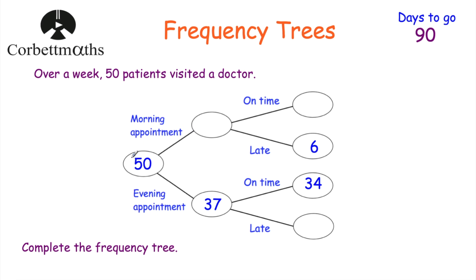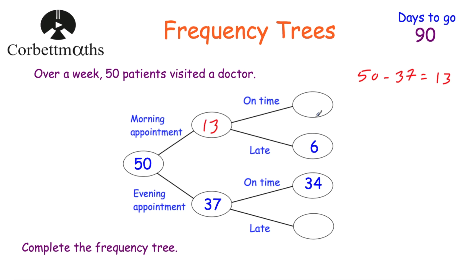So we know that 50 patients went to visit the doctor and 37 had evening appointments. That means the rest must have had morning appointments. So we're going to do 50 take away 37, which is equal to 13. So that means that 13 of the patients had morning appointments. Now let's find out how many were late and how many were on time.